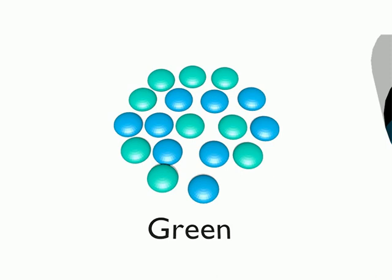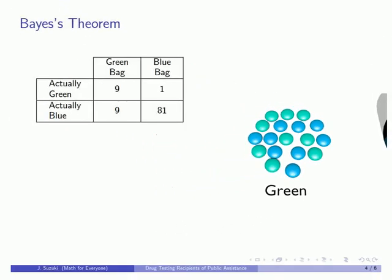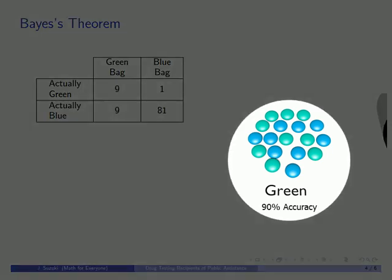And yet if we look at the overall numbers, we see that we've correctly identified nine green tiles as being green, and 81 of the 90 blue tiles as being blue, which means that we've correctly identified the color of 90 of our tiles, which means we can claim an accuracy of 90%. But this is what 90% accuracy looks like in this case. Half of the tiles that we claim are green are not.